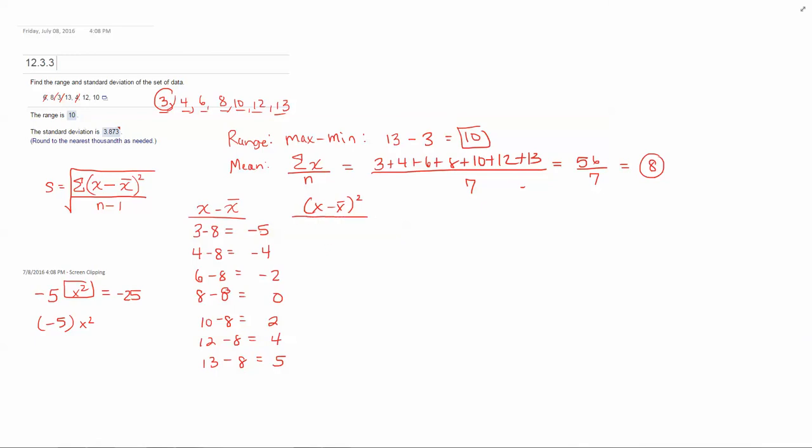So if you want to just not type negatives you can and just do 5 squared, 4 squared, 2 squared since all of those will be positive anyway. So I get 25, 16, 4, 0, 4, 16, and 25.